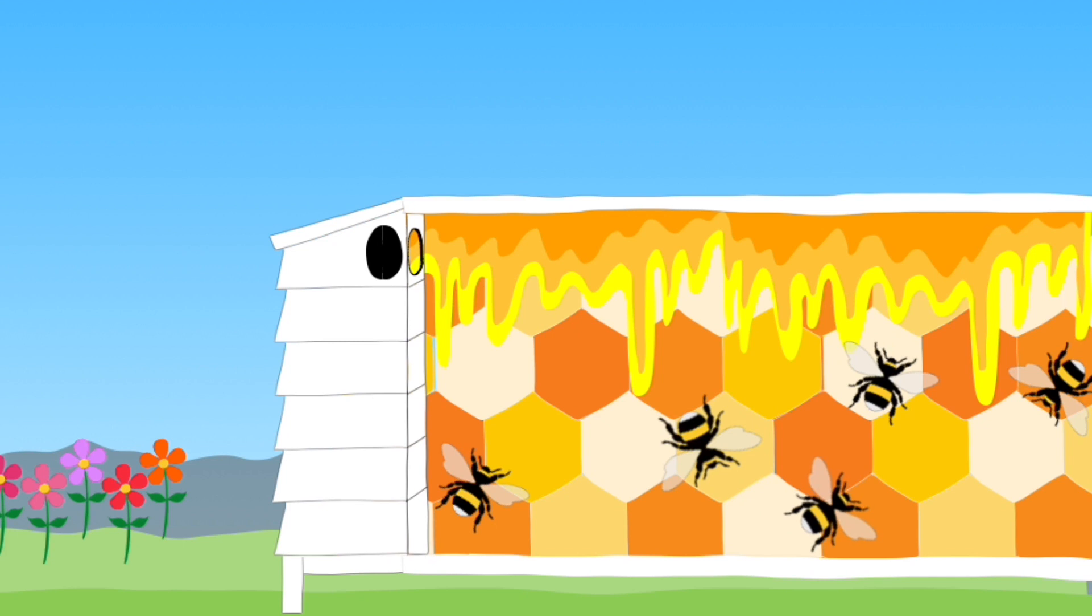Inside the hive they empty the contents of their stomach into another bee. This exchange keeps taking place between the bees in the hive until one bee has a full stomach.